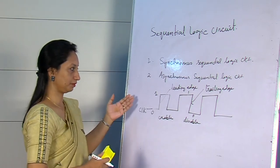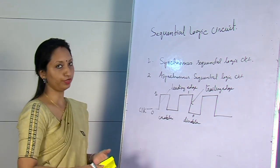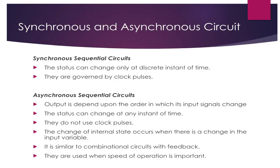Asynchronous logic circuits are simply combinational logic circuits with feedback, that means with a memory element. The output of the asynchronous circuit depends on the order in which its input signals change, and the state can change at any instant of time. Asynchronous circuits do not use clock pulses; the change of internal state occurs when there is a change in the input variable. They are used when speed of operation is important.